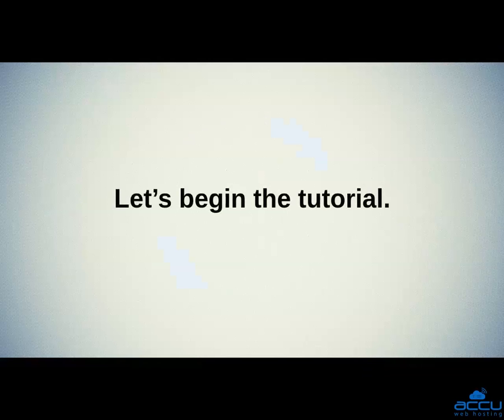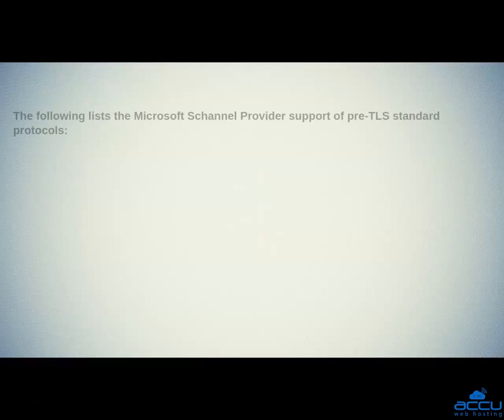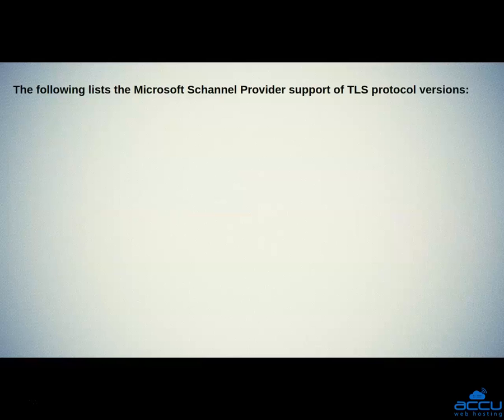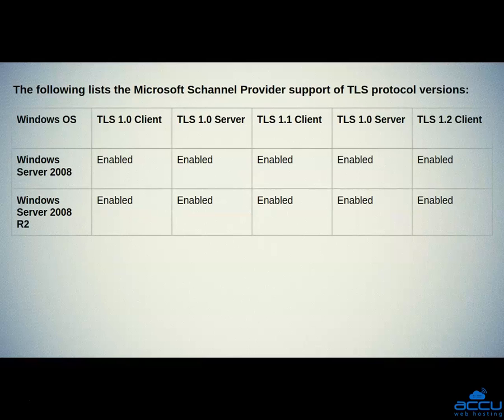Let's begin the tutorial. In Windows Server 2008, by default SSL 2.0 is disabled for the client. However, SSL 2.0 is enabled for the server. The protocol SSL 3.0 is enabled for both client and server. If we talk about TLS, it is enabled for all TLS versions whether it is client or server.